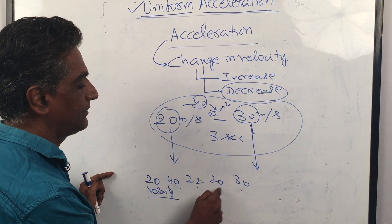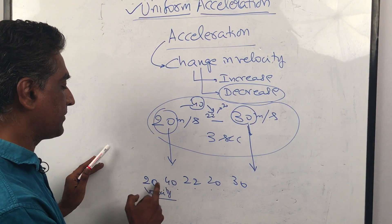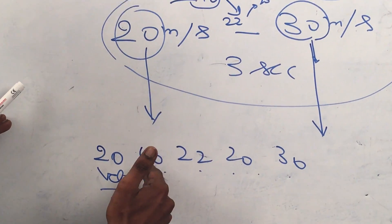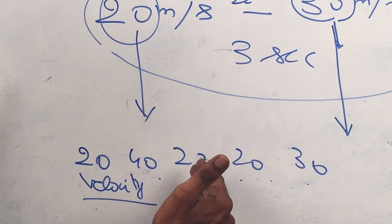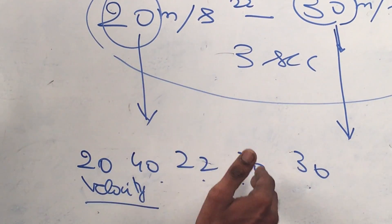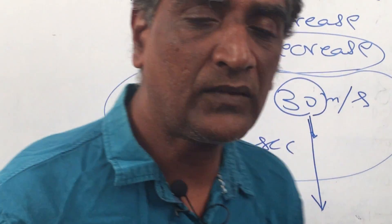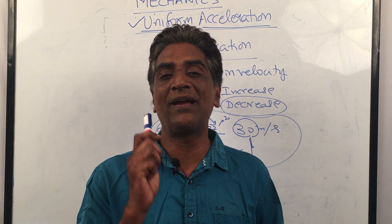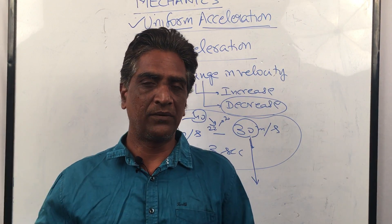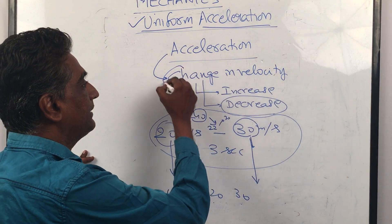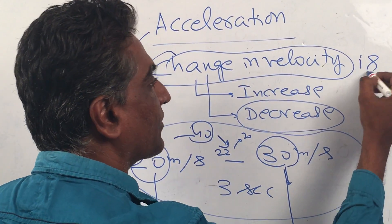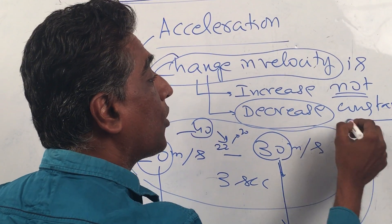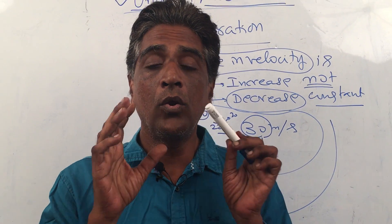You can only give numbers. The acceleration from here to here was 40 minus 20. Then retardation was 40 minus 22. Then the velocity came down from 22 to 20, and then rose again from 20 to 30. We don't get any equation here — this acceleration is not uniform acceleration. It went up, down, up, down. So if the change in velocity is not constant, it is non-uniform acceleration.